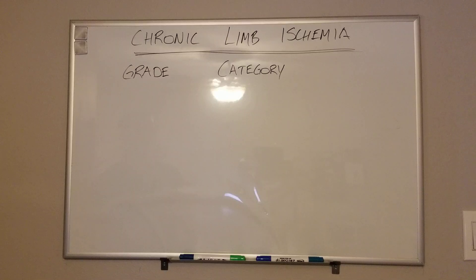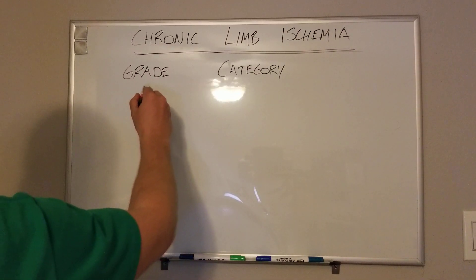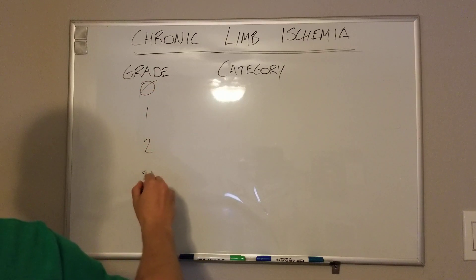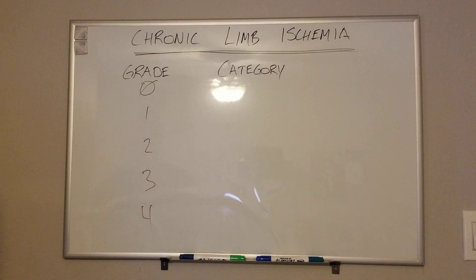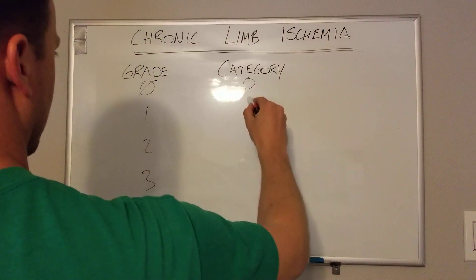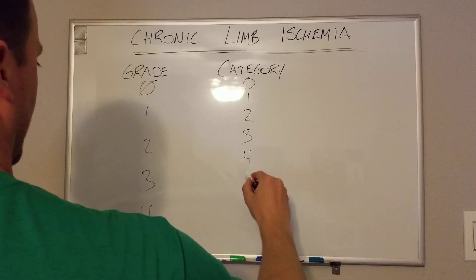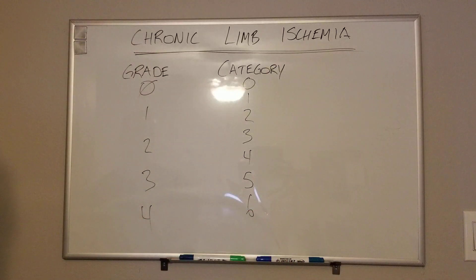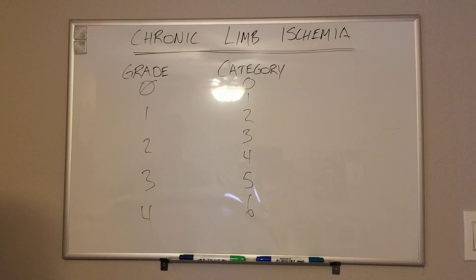When you talk about grade two chronic limb ischemia, for example, it's different than category two, so you can't use these interchangeably. Grade is a little bit simpler because it just goes zero through four. The nice thing about this is that it lumps all claudicants — mild to super severe — into just grade one. Category, rather, goes from zero to six and actually teases out whether it's mild, moderate, or severe claudication. So let's go through each one.